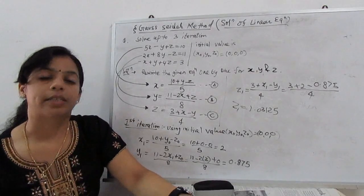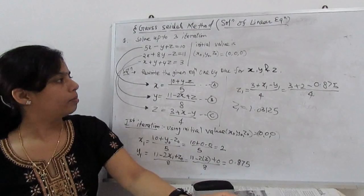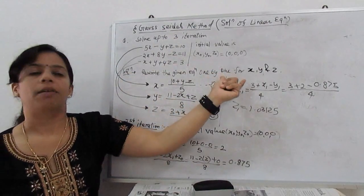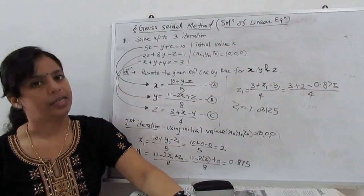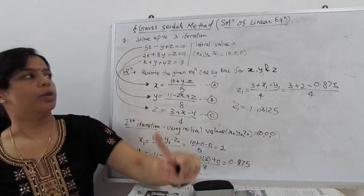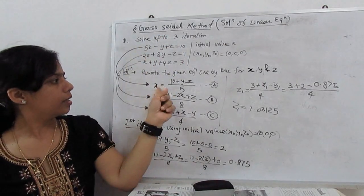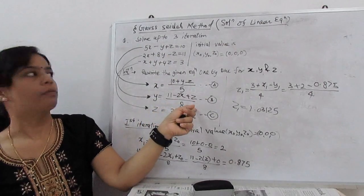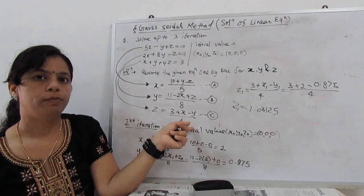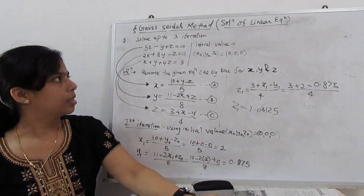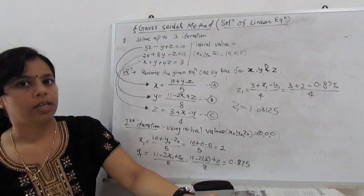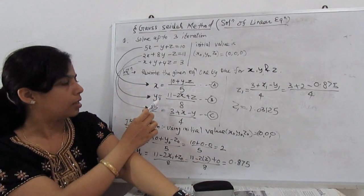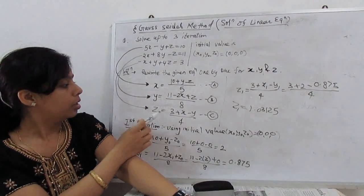We start the solution. Step one for Gauss-Seidel method and Jacobi method is the same. Rewrite the given equations one by one in the form of X, Y, and Z. My first equation rewrite in the form of X, my second equation in the form of Y, my third equation in the form of Z. That is not necessary. Any one equation we write in the form of X, other one in Y, third one in Z.